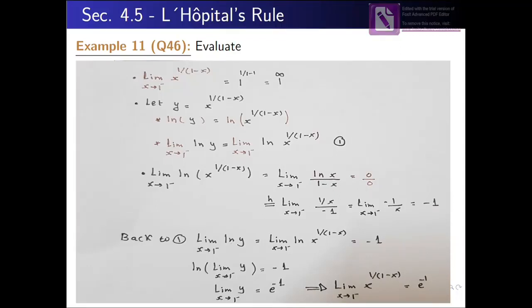We have another example: evaluate the limit of x^(1/(1−x)) when x approaches 1 from the left. If you replace x by 1, we get 1^(1/(1−1)), which is 1/0, giving us infinity. So we have 1^∞, which is another indeterminate form. We cannot apply L'Hôpital's rule directly.